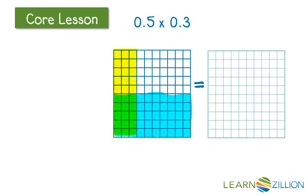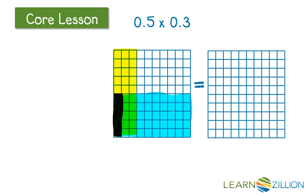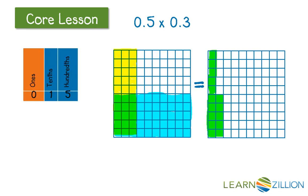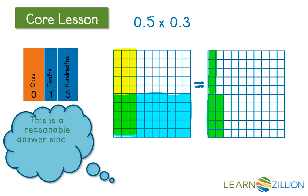Let's take a look. If we wanted to combine those 5 tenths of 3 tenths, I could take 1 of the pieces, 2 of the pieces, 3 of the pieces, all 3 of those pieces, and I would be able to see that that's 1 tenth and 5 hundredths. This is a reasonable answer since it's close to my smart estimate.